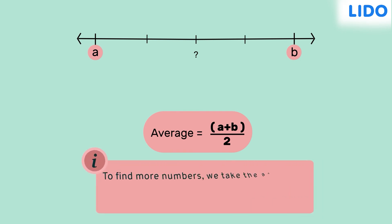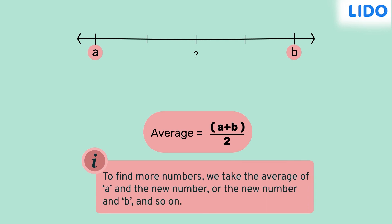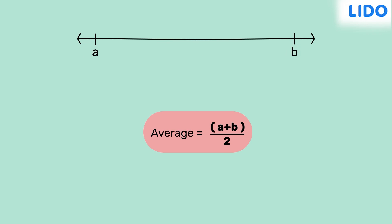And to find more numbers, we take the average of a and the new number, or the new number and b and so on. By this method, we can find as many rational numbers between two given rational numbers. That's simple.